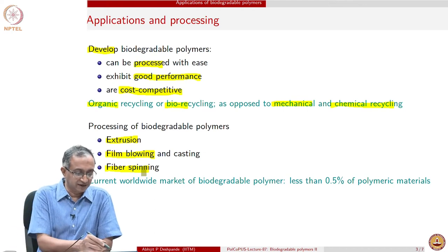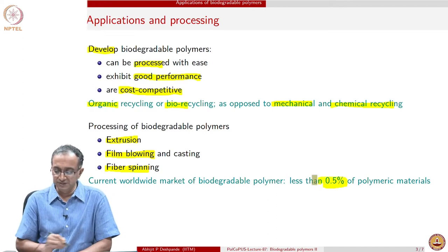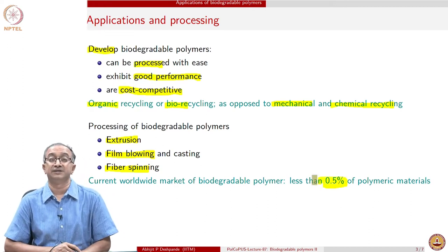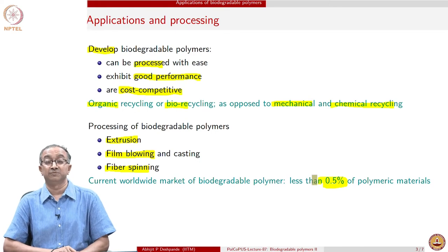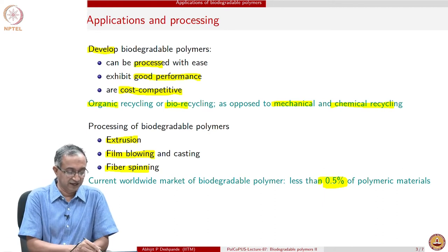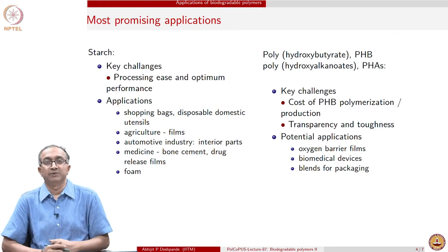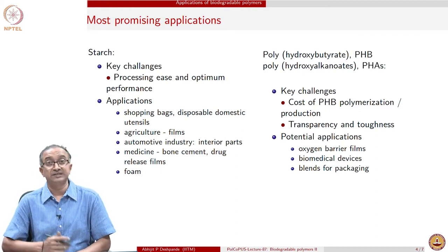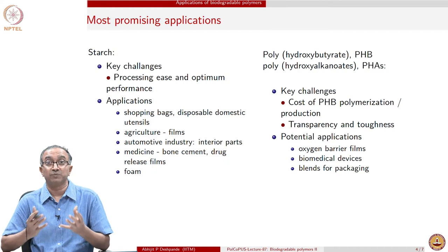If you look at the current numbers, the overall use of biodegradable polymers is very small — less than 1 percent, in fact around 0.5 percent, in terms of the overall amount of biodegradable polymers being used compared to complete polymeric material usage. So there is significant scope for moving towards more and more biodegradable polymers. Let us look at how the current products made out of biodegradable polymers are made and what products are being made.